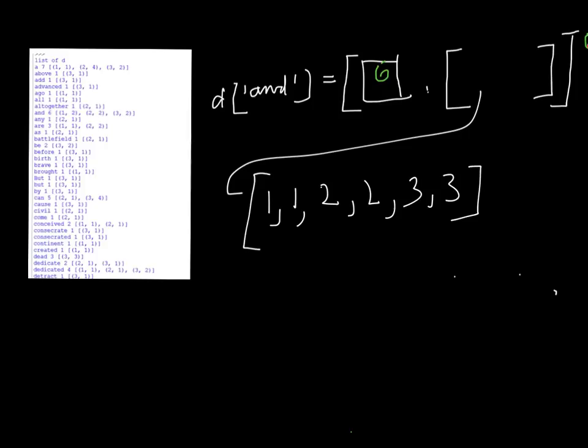The way we're going to do this is by creating a dictionary D. Every entry in the dictionary corresponds to one of the words in the file. For AND, the entry is a list with two components: the first component is the integer six, because the word AND appears six times; the second component is a sub-list containing all the line numbers where the program found the word AND.